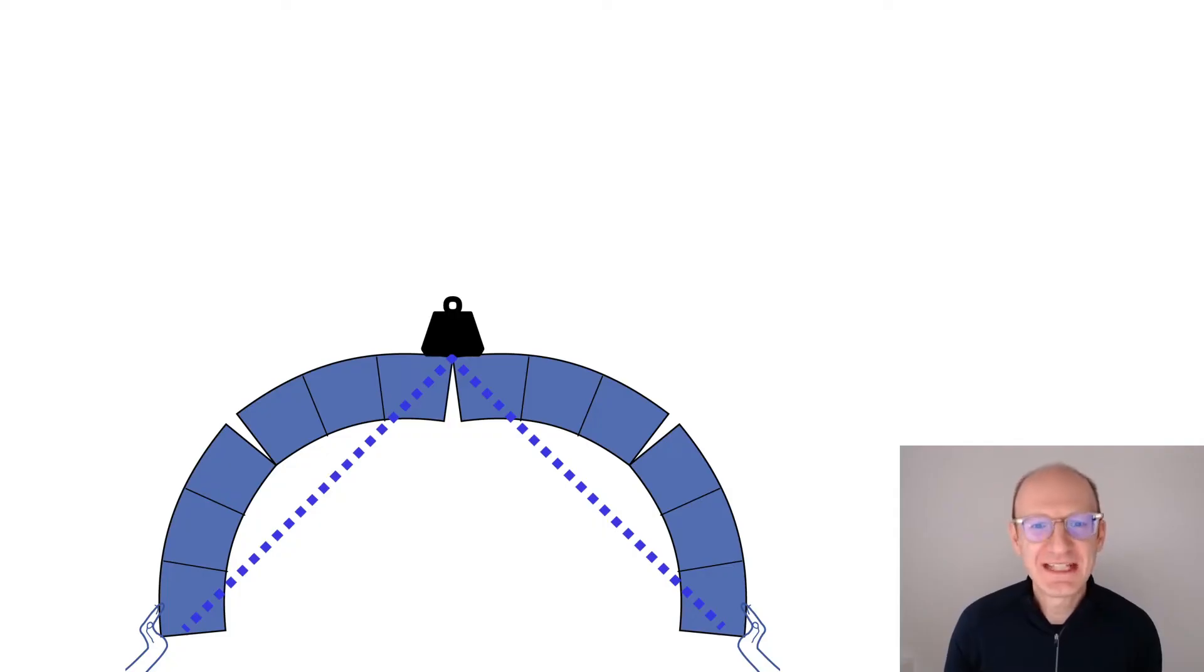So let's start with a reminder about arches and the idea of a thrust line. Remember this is an image I showed before, a single weight in the middle. The thrust line, where the forces want to go, is directly from that weight down to the supports either side.